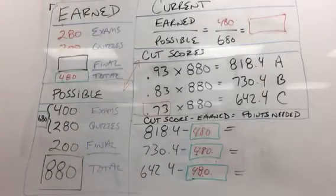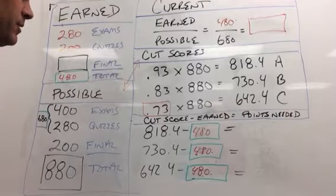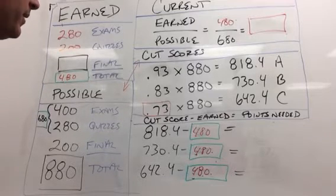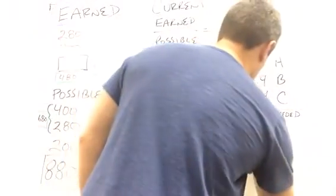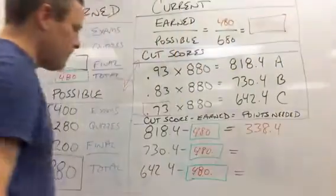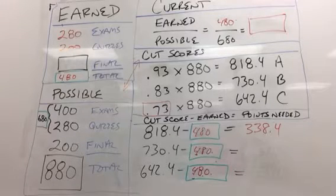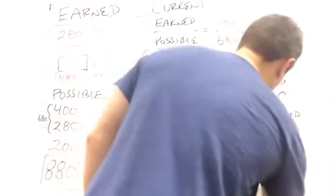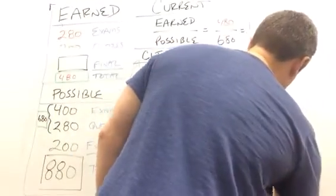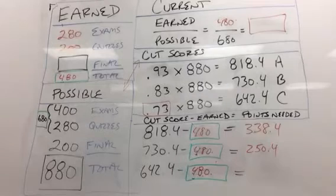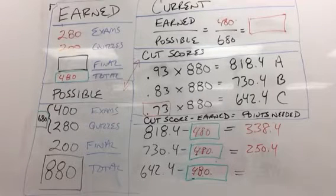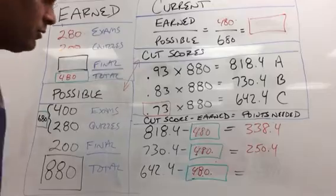Which is going to change our points needed completely. So now we have 818.4, which is going to give us 338.4. And then 730.4 minus 480 is going to make 250.4. And now 642.4 minus 480, I'm looking at 162.4.